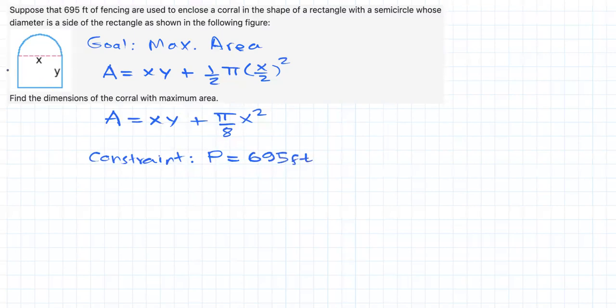But what's the perimeter according to the figure? Well, this guy is y, so we have twice y plus this guy is x plus x. That's for the rectangular part, for the circular part, again, one half of this time 2 pi r. But what is r? The radius of the circle is just x over 2, right? x over 2. That is the perimeter, right? And that has to be equal to 695. Great.